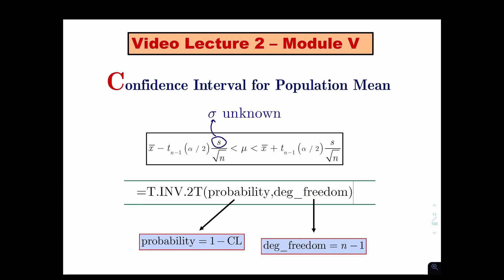When you're trying to construct the confidence interval for the mean of a population or estimate the mean, you use the same formula you used for the sigma known case, with the only difference that instead of using Z values, you must use T values. It's just like another Z value, but we're not going to get into what the distribution looks like.